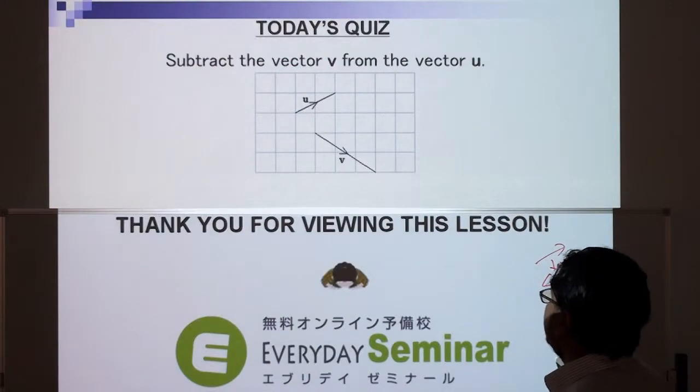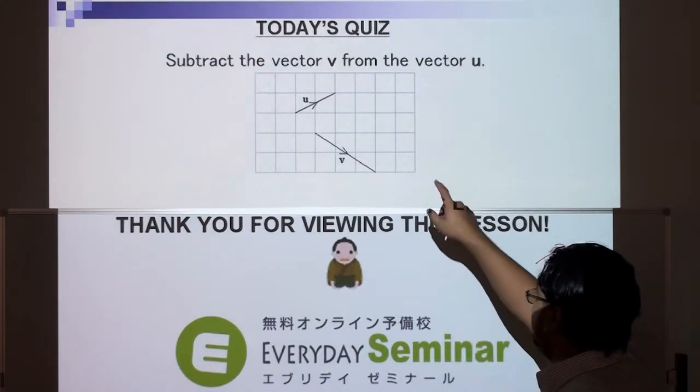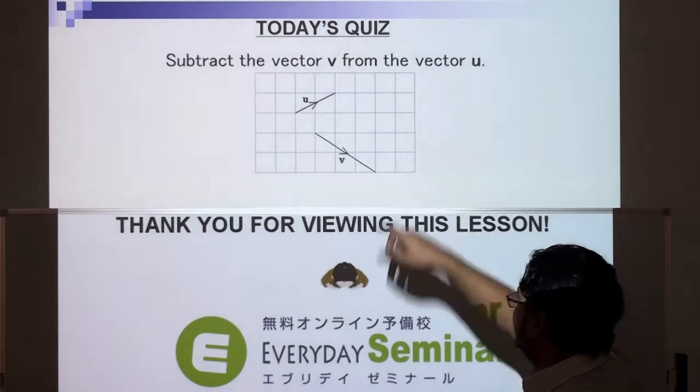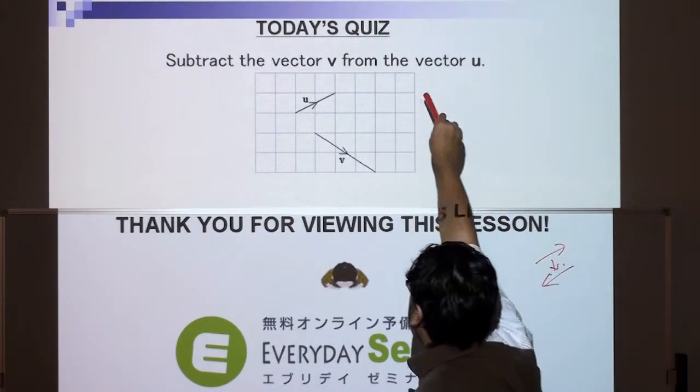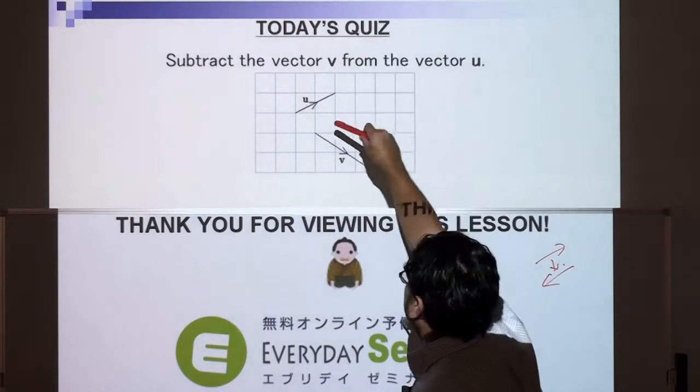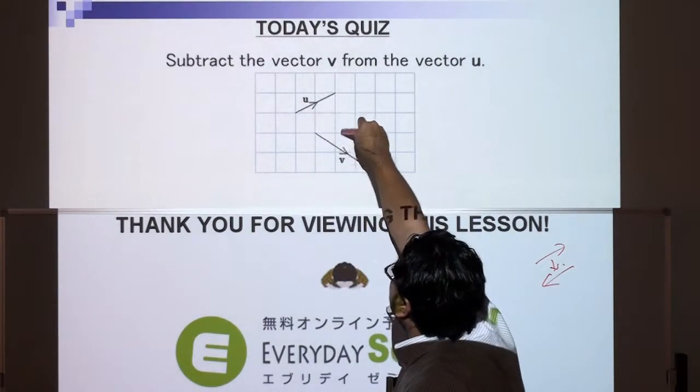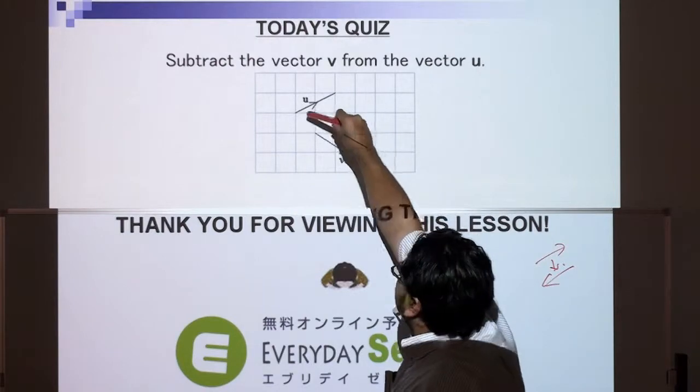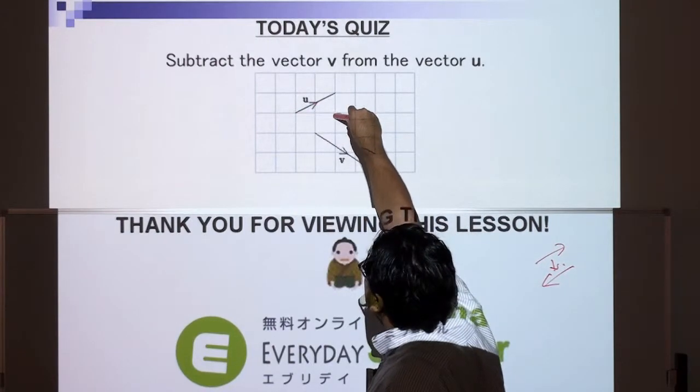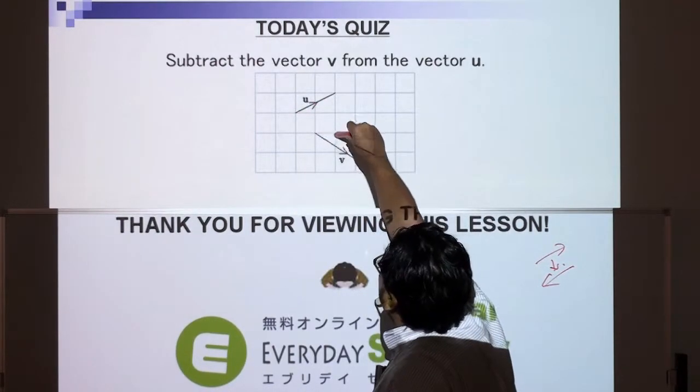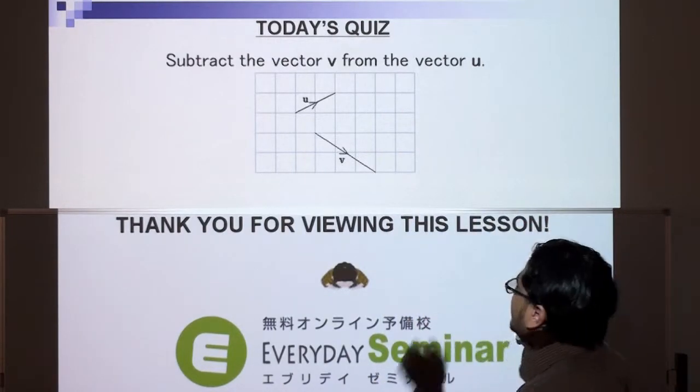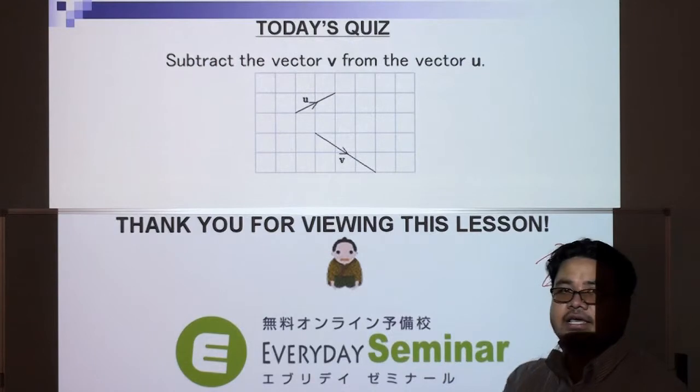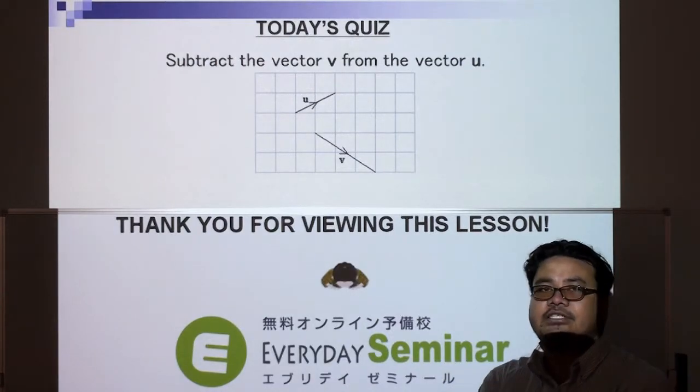So today's quiz: subtract the vector v from the vector u. Very simple. Notice that there's a piece of graph paper at the back, so it should help if you have these little blocks here to measure the distances. Notice that u is 1, 2 and 1 up. V is 1, 2, 3 across and 1, 2 down. We'll go through the solution next week. Thank you for joining us today, hope you had a good time.